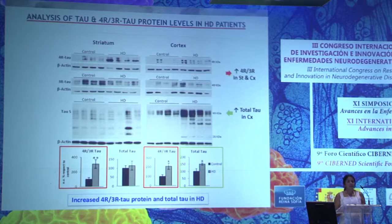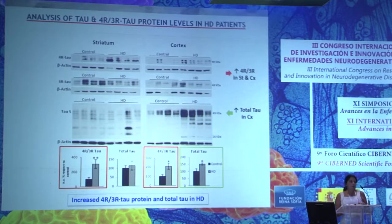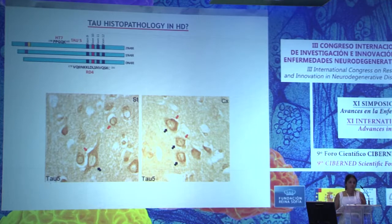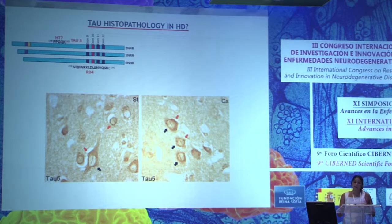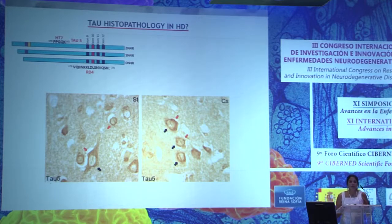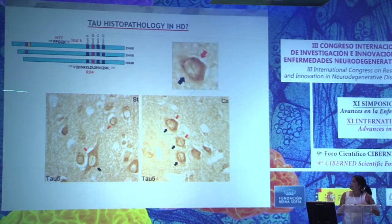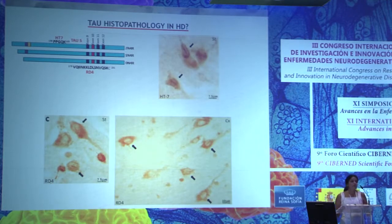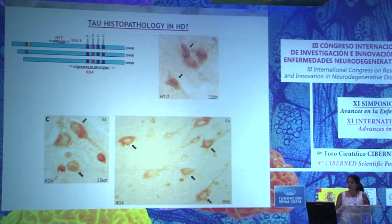Since tauopathies are characterized by tau deposits inside affected neurons, we wanted to know if Huntington's disease also shows histopathological tau pathology. Using immunohistochemistry with antibodies detecting total tau in the brain of HD patients, we found tau in the form of perinuclear rings, but also a structure in the nucleus that has not been previously described. We repeated this immunohistochemistry with different tau antibodies in the striatum and cortex, and we have named this new tau histopathological hallmark 'tau nuclear rods.'